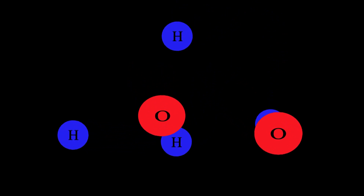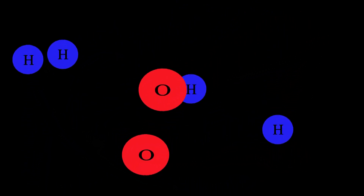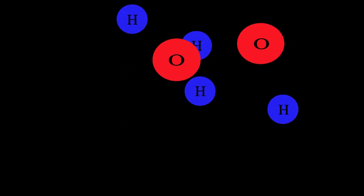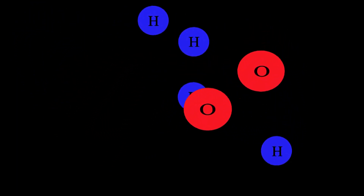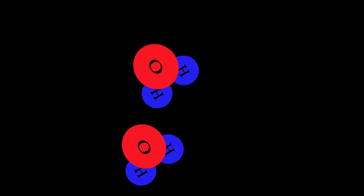Molecules are a group of atoms bonded together to make the smallest unit of a substance. Molecules bond with other molecules in a chemical reaction to make a new substance. An example most everyone is familiar with is H2O — here two hydrogen atoms combined with an oxygen atom to form water.